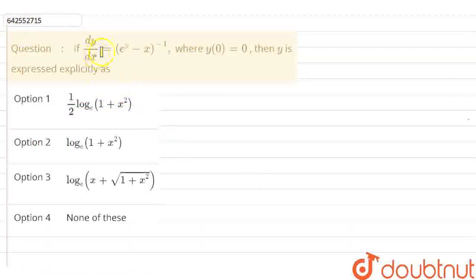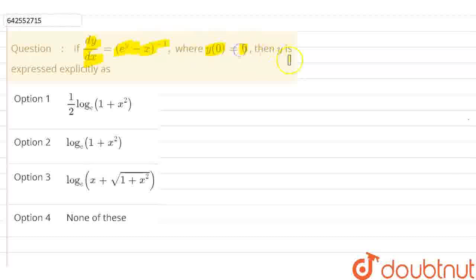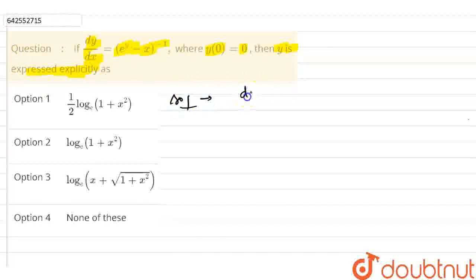Hello everyone. Here we have a question: if dy/dx equals e raised to the power of (y minus x) raised to the power of minus 1, where y(0) equals 0, then y is expressed explicitly as — we have four options and we have to check which option is correct. First, I am writing this given equation: dy/dx equals e raised to the power of (y minus x) raised to the power of minus 1.